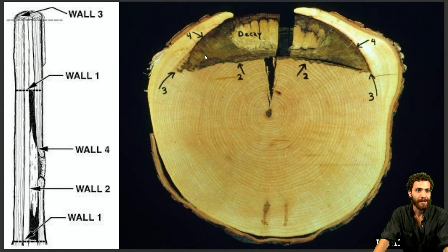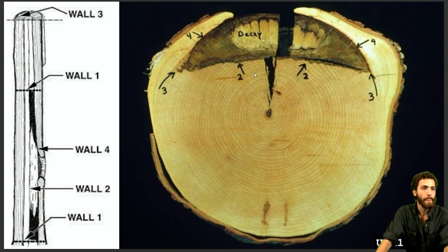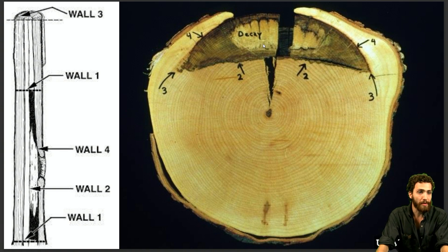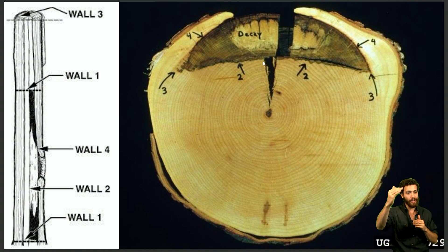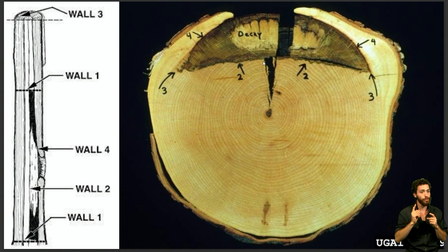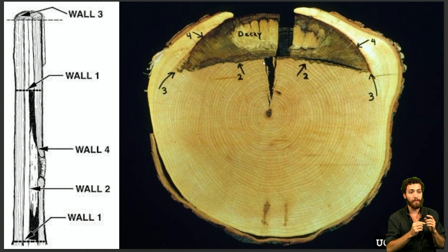Here are walls two through four, again increasing in order of strength. Wall two, the second weakest wall, prevents movement towards the pith — it prevents radial movement from the outside towards the pith. It's crucial to note it works only one way: wall two prevents movement from outside to in, not vice versa.